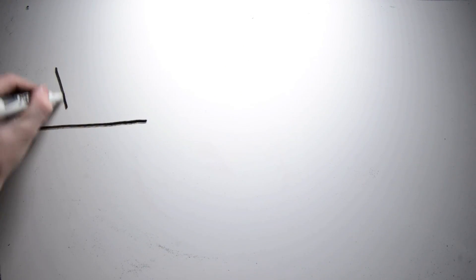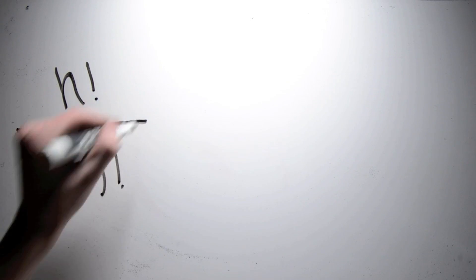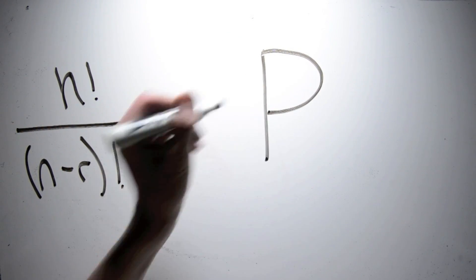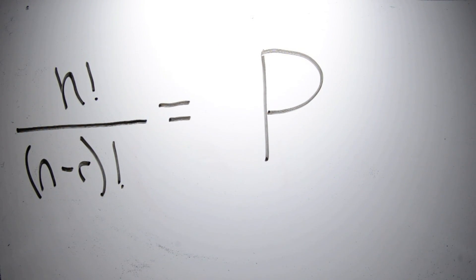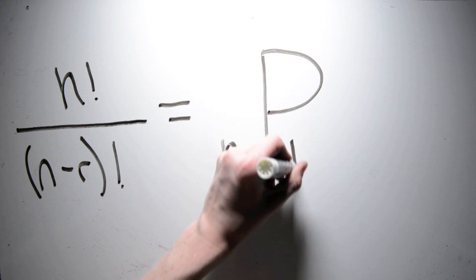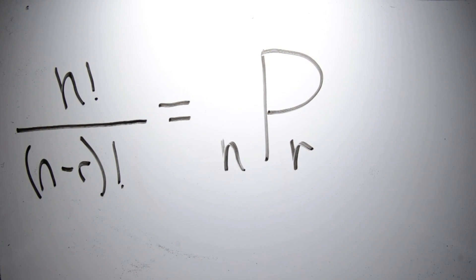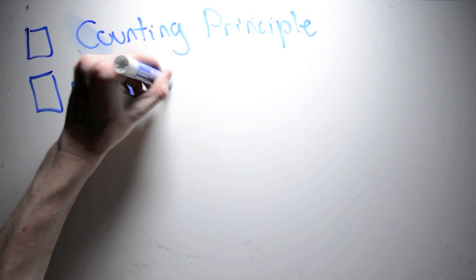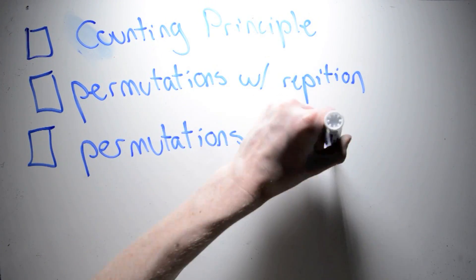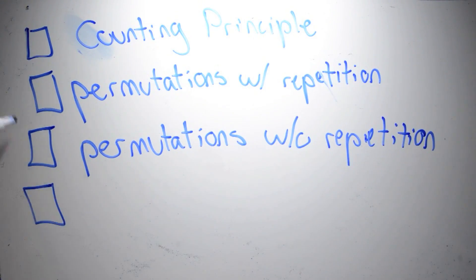Since mathematicians are lazy and don't like to write as much, they made a new kind of notation just for permutations. It looks like this: a normal-sized capital P with two smaller numbers beside it. The one on the left always represents n, and the one on the right always represents r. When you see this, you solve everything just the same — it just tells you the information you need. So far we've covered the counting principle, permutations with repetition, and permutations without repetition.